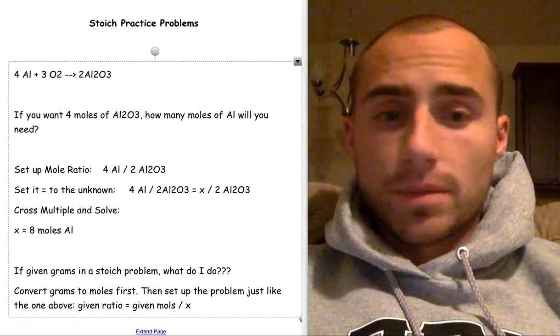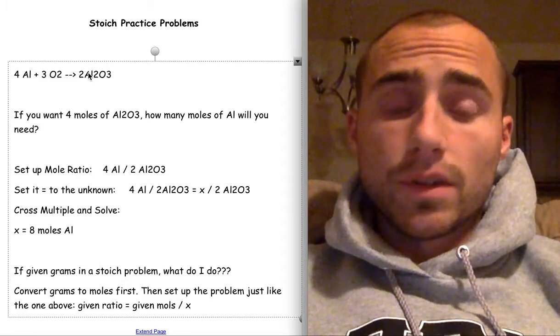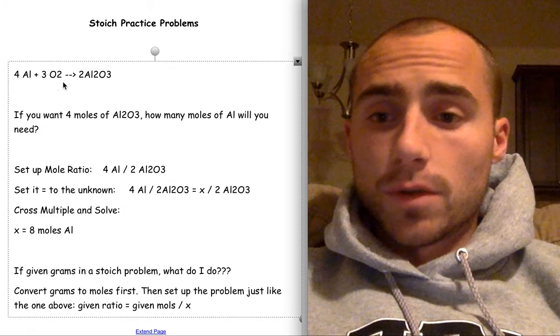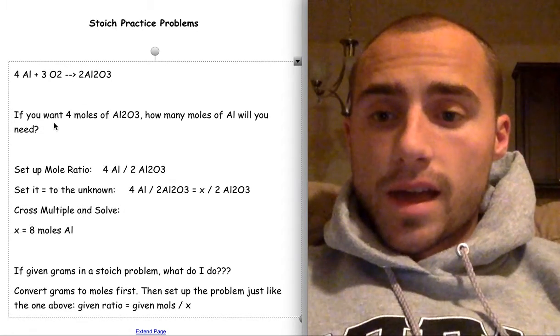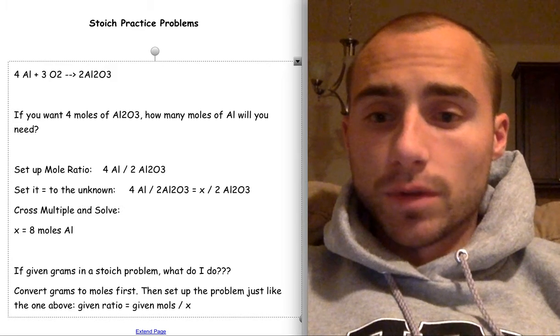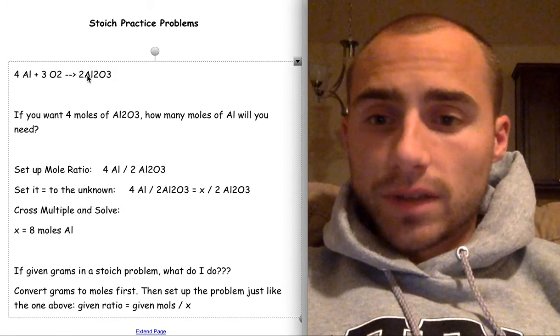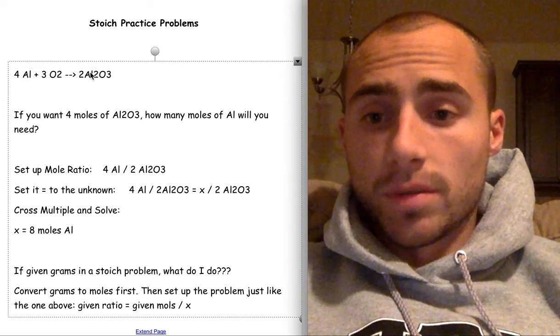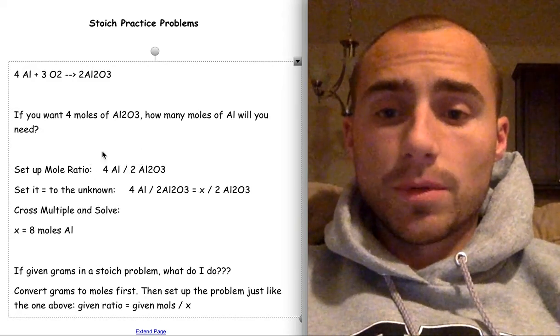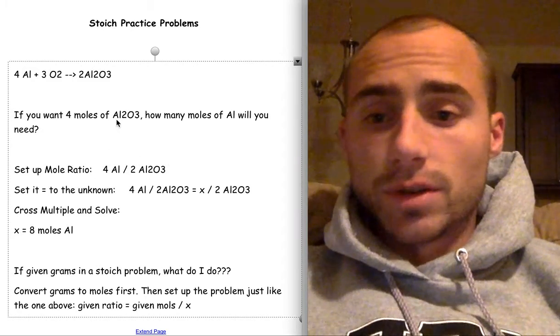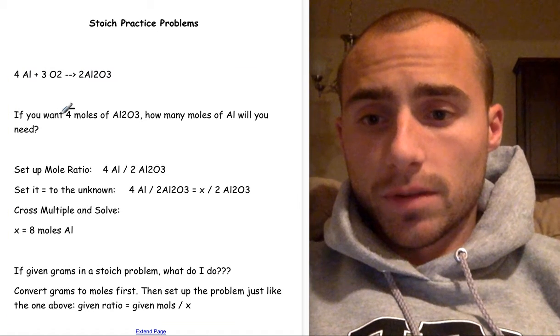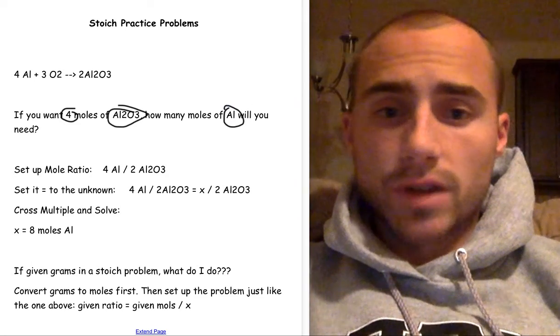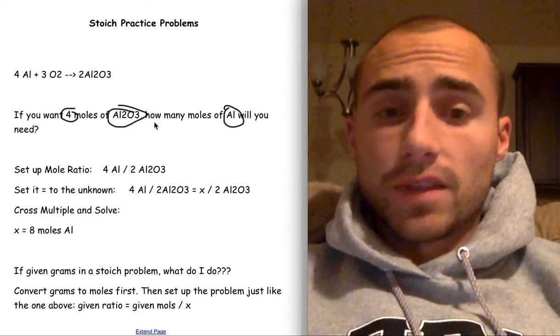Okay, stoic practice problems. These are going to go through quick. I would recommend going back and watching the previous stoic videos. I promise those will help you. So our balanced equation, 4 aluminum plus 3 oxygen produces 2 aluminum oxide. If you want 4 moles of aluminum oxide, how many moles of aluminum do you need? So basically it's like you're substituting a 4 right here. You're basically putting a 4 in there for aluminum oxide. So how many aluminum would you need? Well, you first set up your original mole ratio. So identify the elements that you care about. I always recommend circling the numbers in the equation. We have 4 moles of aluminum oxide and then you want to know about Al. So I always recommend circling the things that are important so you know what you're doing.